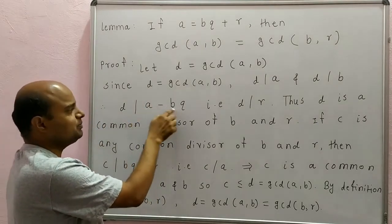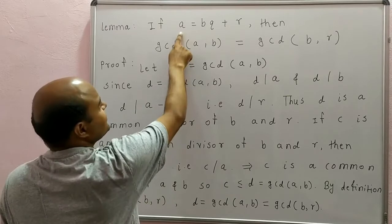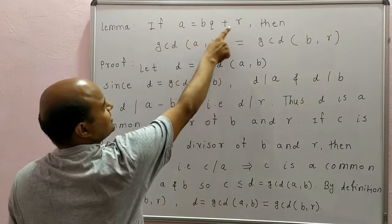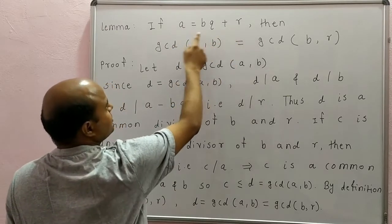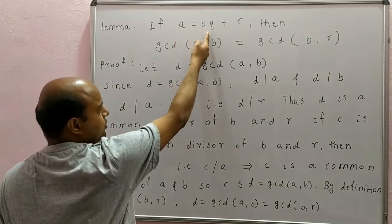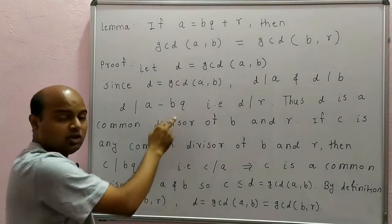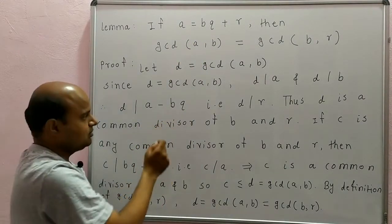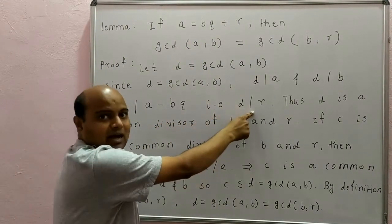But A minus BQ is what? See here: A is equal to BQ plus R, therefore R is equal to A minus BQ. A minus BQ is R. Therefore, D divides R.